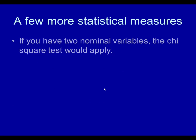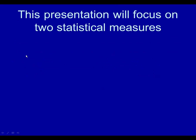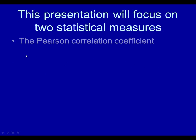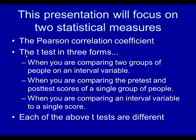If you have two nominal variables, the chi-square test would apply. If you have two ordinal variables, the Spearman correlation would apply. This presentation will focus on two statistical measures: the Pearson correlation coefficient, and the t-test, which can take at least three different forms. One is when you're comparing two groups of people on an interval variable. One is when you're comparing the pre-test and post-test scores of a single group of people. And the third is when you're comparing an interval variable to a single score.